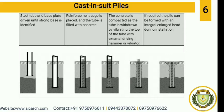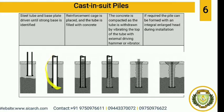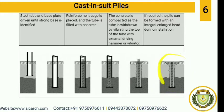Next is cast in-situ pile. A cast in-situ pile means the pile will be made directly on the site. Here we will have a steel tube and a base plate which will be drilled inside the soil until we reach a strong base. After inserting the steel tube, a reinforcement cage will be placed inside the steel tube. After that, concrete will be poured into the steel tube. After curing, the steel tube will be removed. In the end, the pile foundation will have reinforcement and a base plate.